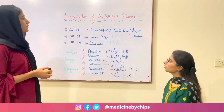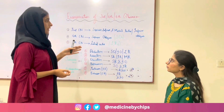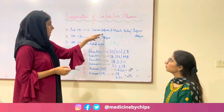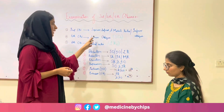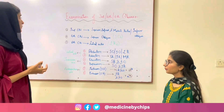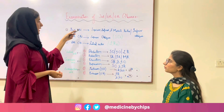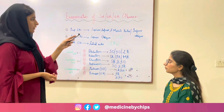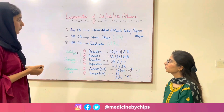These nerves supply the extraocular muscles, which involve all four recti and the oblique muscles. The recti involve the superior, inferior, medial and lateral rectus, and the obliques involve the superior and inferior oblique. The 3rd cranial nerve supplies the superior, inferior and medial rectus, and inferior oblique. The 4th cranial nerve supplies the superior oblique.